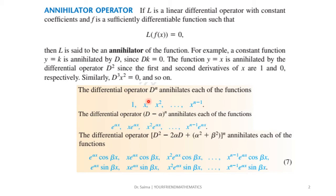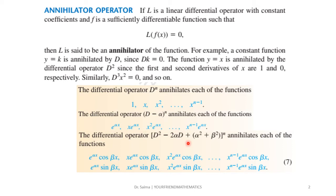Generally, the differential operator D raised to power n annihilates each of the functions that are powers of x up to x^(n-1). For exponential functions, the operator is (D minus alpha)^n. For functions like cos(βx), sin(βx), e^x·cos(βx), or e^x·sin(βx), or with powers of x multiplied in, the annihilator is (D² − 2αD + α² + β²)^n, because these are solutions of those functions.